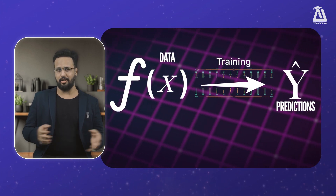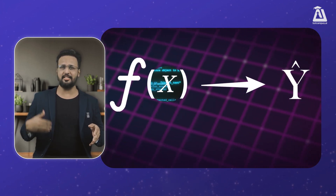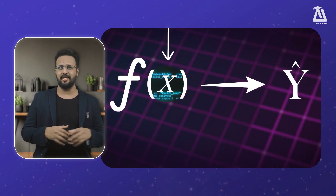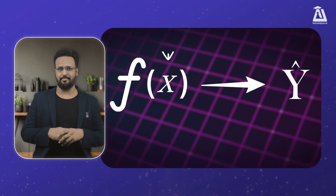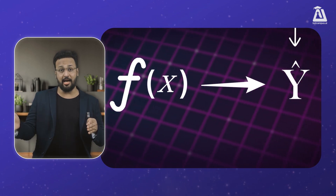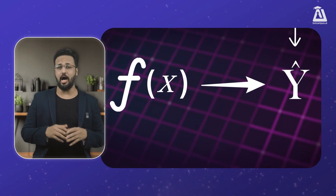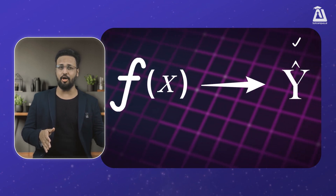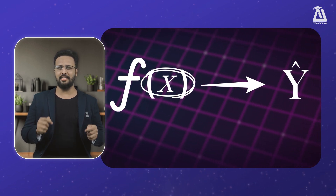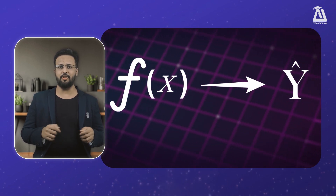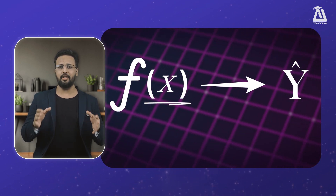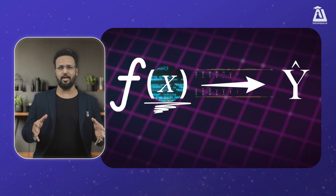During training, we feed the system loads of data. This data, or x, is full of features — that's the technical term for the information bits we care about. And y is the outcome we already know. Our goal is to teach the model to predict y based on x. Once the model has learned the rules, it's ready to make predictions on new data — we input new features and our model predicts the outcome, called y-hat.